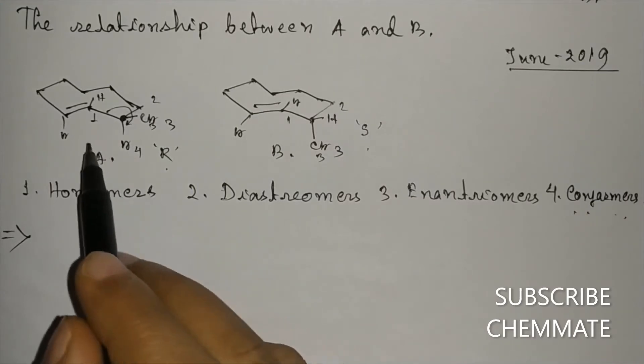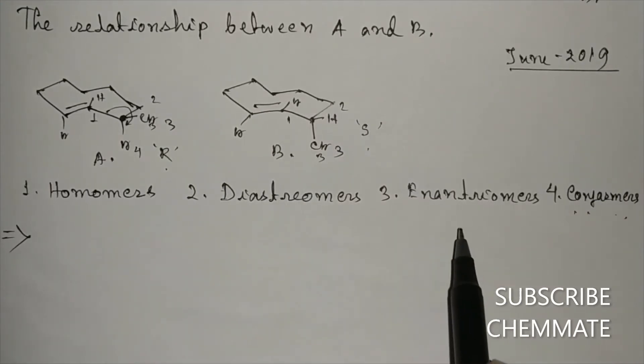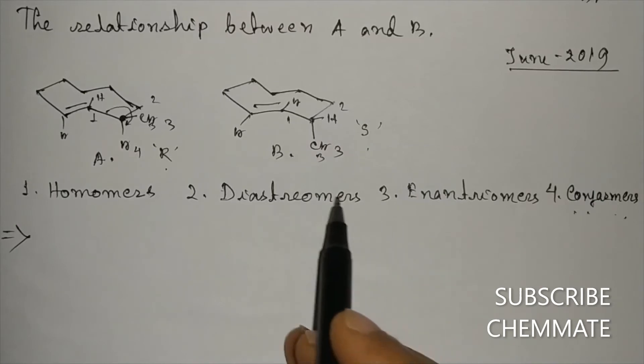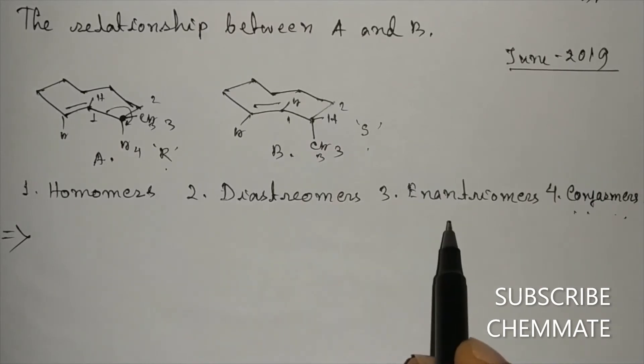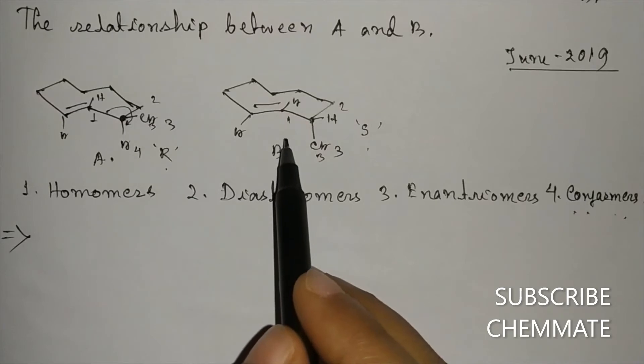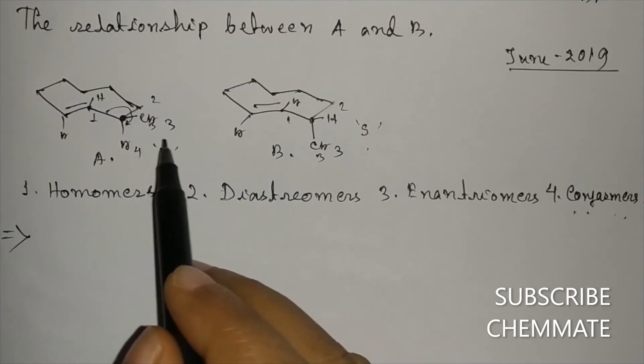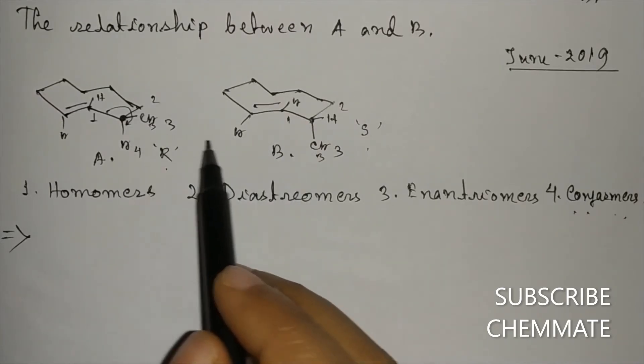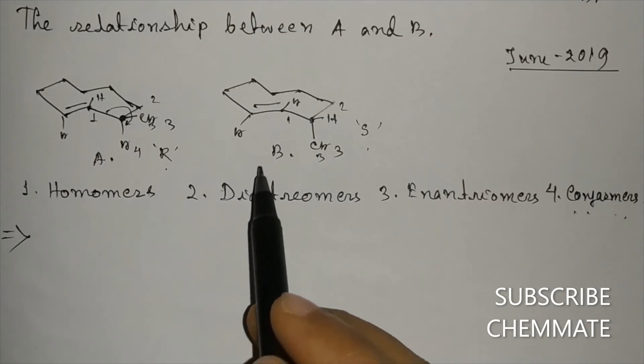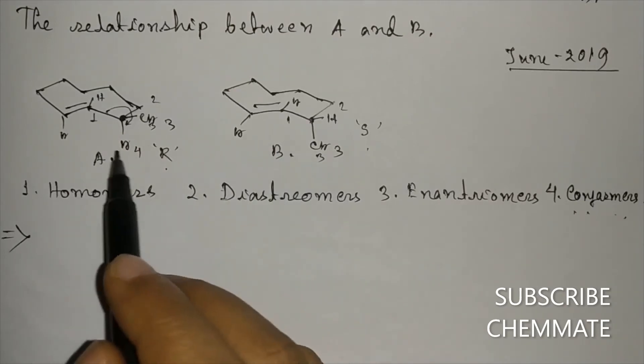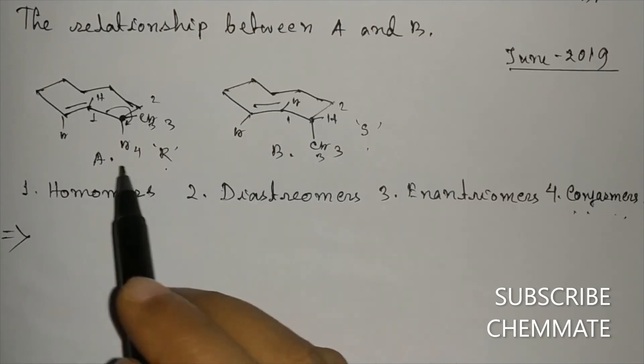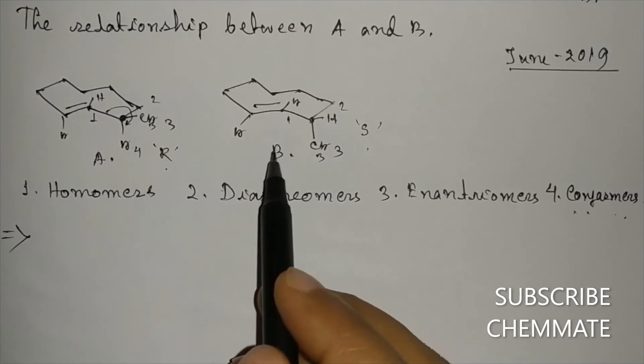Now we have to see whether they are diastereomers or enantiomers. These two cannot be enantiomers because they do not possess mirror image relationship between them.